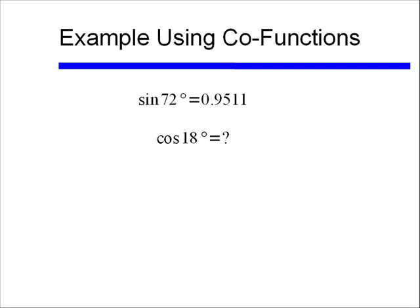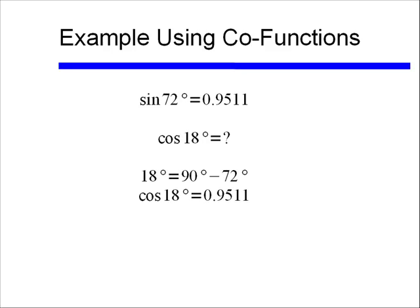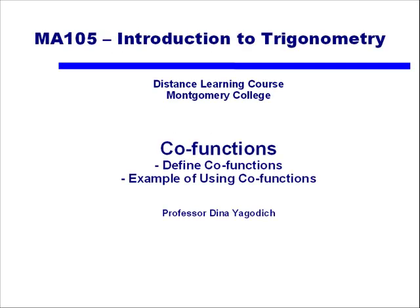Let's do an example using what we've just learned. If sine of 72 degrees equals 0.9511, and we're asked — without using a calculator — what is cosine of 18 degrees? If you recognize that 18 degrees is the complement of 72 degrees, that is 90 degrees minus 72 degrees equals 18 degrees, then the answer is simply: cosine of 18 degrees equals sine of 72 degrees, or 0.9511. And that is an explanation of co-functions, or complementary functions, and an example of how we can use them.